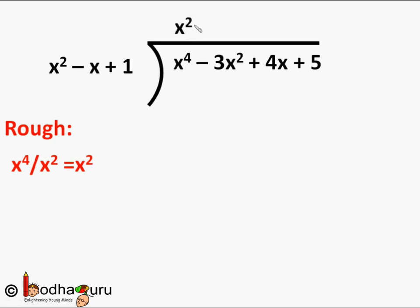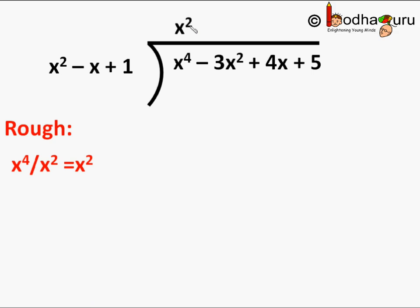This is the first term of the quotient, which we write above. Now we multiply the divisor x² minus x plus 1 by x², the quotient we just got. This gives us x⁴ minus x³ plus x², which we write below the dividend.